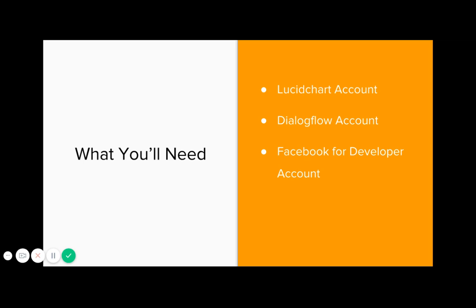So what you'll need for this class is, of course, a Dialogflow account. If you don't have one right now, don't worry — for the first portion of this class, you won't need it, and I'll tell you when you should get one. You'll need a Facebook for Developers account as well, and finally a Lucidchart account. We're going to be building flow charts of interaction with your agent, so the Lucidchart account will be useful for that. And of course, you'll need a bit of dedication. You can do this class in several days or weeks, but if you don't take the time to do the exercises, you won't be able to create a great NLP Dialogflow agent.